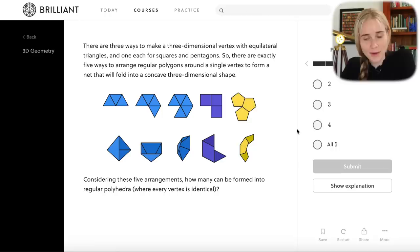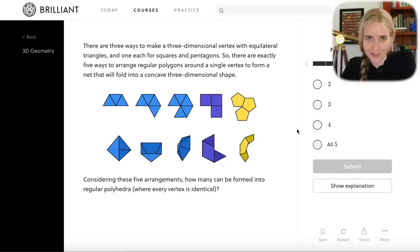And so putting it all together, we've found that there are three ways to make a three dimensional vertex using the equilateral triangles. Those are the ways we just saw. And there's only one way to make a vertex using the squares. That was that three sided intersection. And we know that a five sided shape is the maximum that you'd be able to use to make a vertex at all.